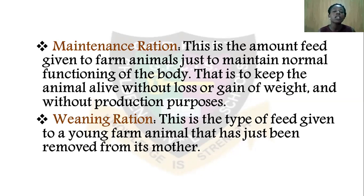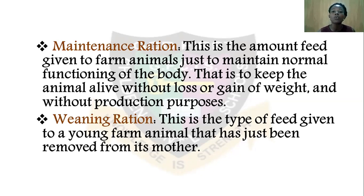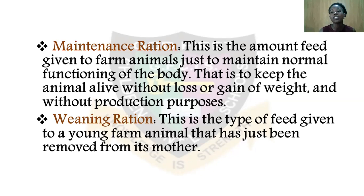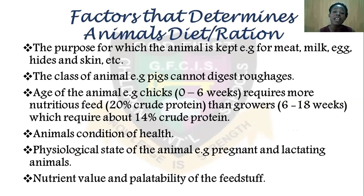Next is weaning ration. Weaning is the removal of a young growing animal from its mother. Weaning ration is given to the animal especially when they want to separate it from the mother — when the mother is to produce a new offspring. To substitute for the deficiency of what the young one is lacking from the mother, they are given what is known as weaning ration. These are the types of rations or diets we have.